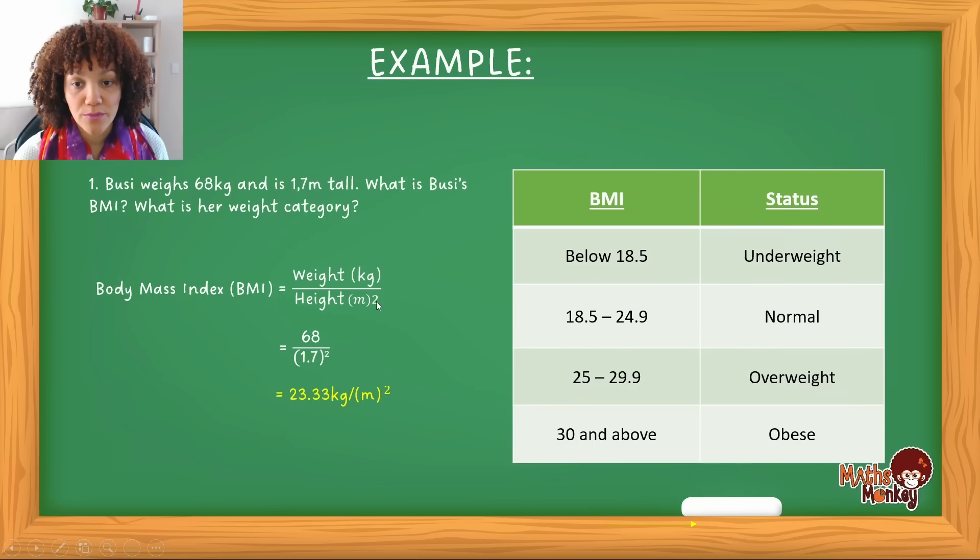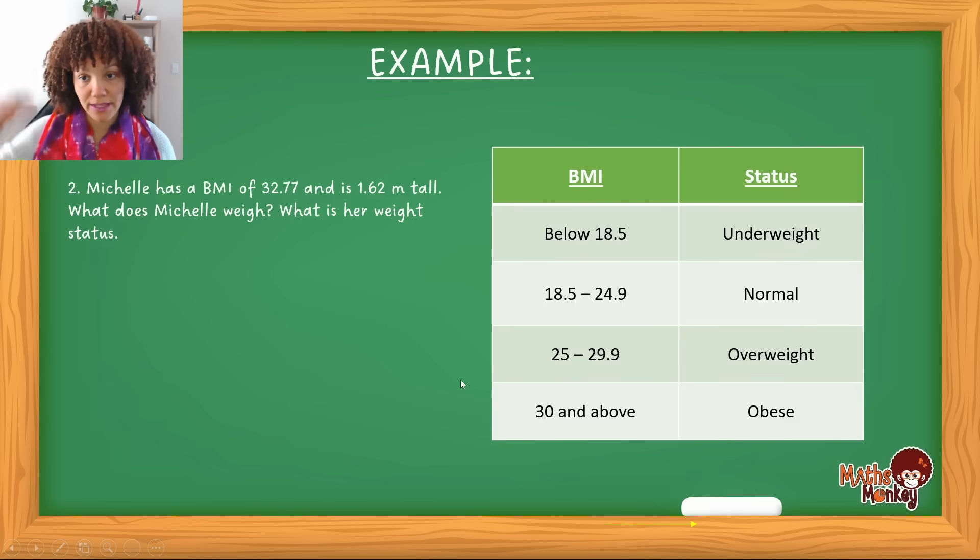Sorry, this is supposed to be meters squared. So Boussi is normal weight. So let's have a look at the second example now. So here they say Michelle has a BMI of 32.77 and is 1.6 meters tall. What does Michelle weigh? What is her weight status?